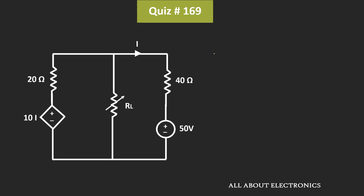Now, we know that for the maximum power transfer, the value of this load resistor RL should be equal to the Thevenin's equivalent resistance — that means the Thevenin's equivalent resistance of the equivalent circuit. So for that, first of all, we need to simplify this circuit and find the value of Vth, that means the Thevenin's equivalent voltage, and the Rth.